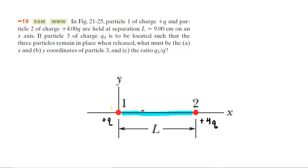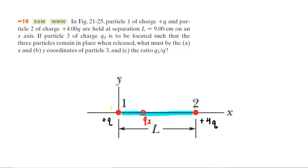Let us place Q3 between the charges and figure out whether it's positive or negative. If Q3 were positive, that would make all three charges positive, and they would simply repel away from one another. For example, Q1 would be pushed to the left by Q3, and also pushed to the left by Q2. The net force acting on Q1 would not equal zero, so the assumption that Q3 is positive is erroneous.